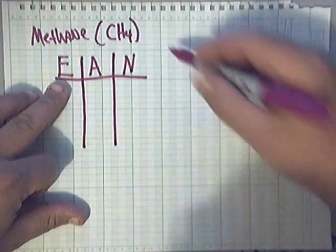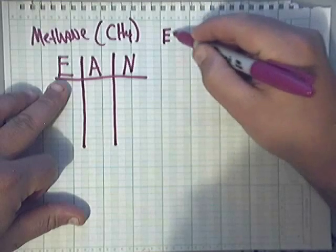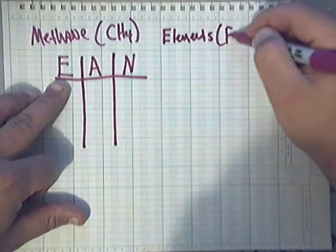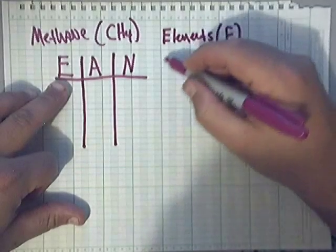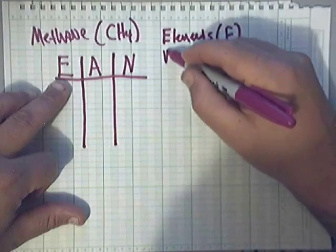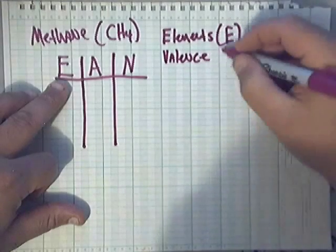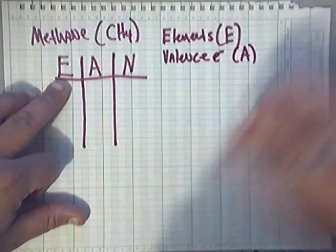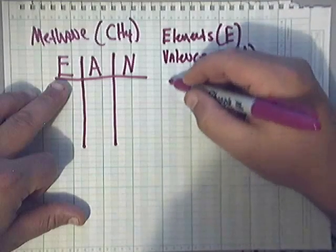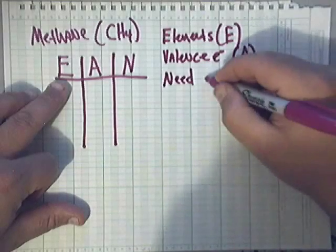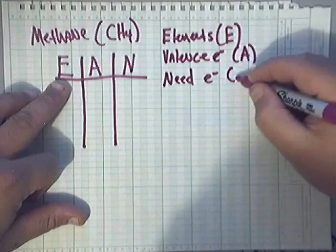Now this is the elements individually. A stands for valence electrons, basically available electrons. That's what the A is. And the N is the needed, the need electrons, what you need. That's N.